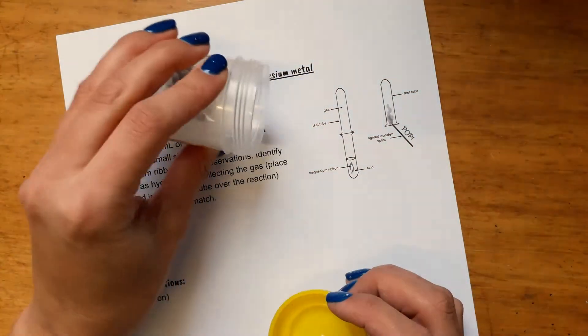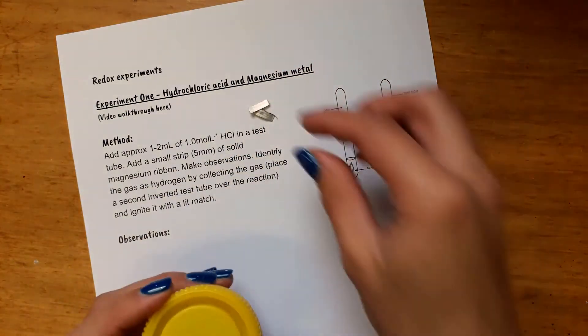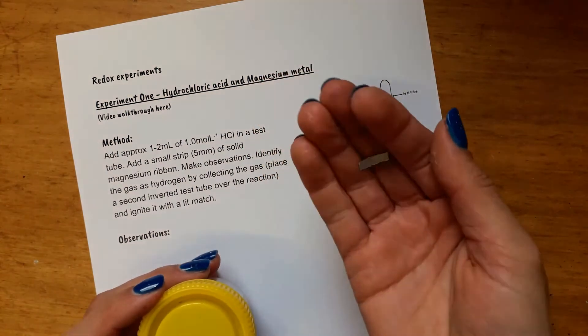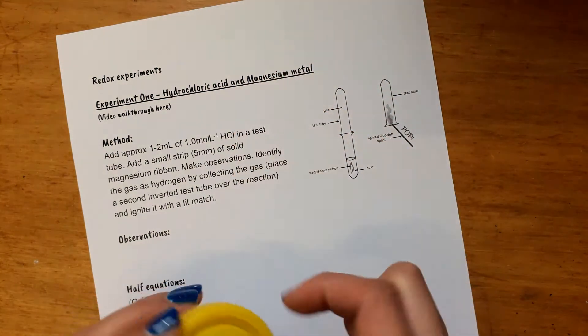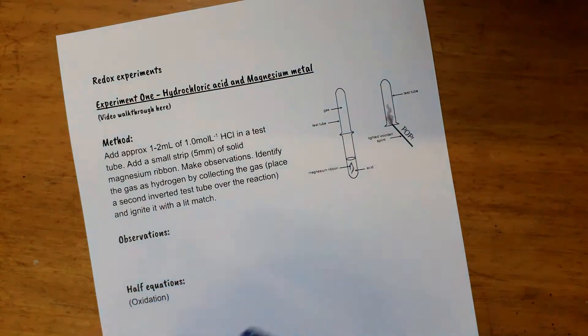I've got some here. It's really small. It's silver. Quite shiny stuff, right? So you'll just put one of those in the test tube and you need to make some observations.